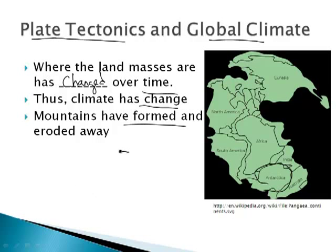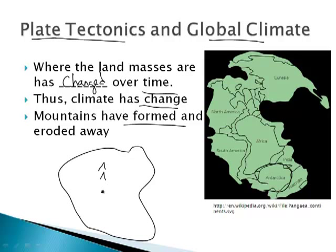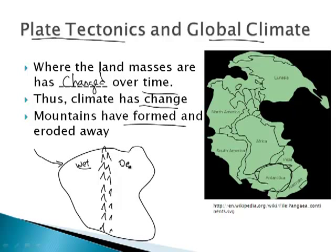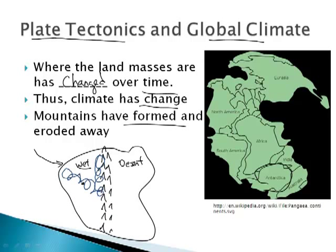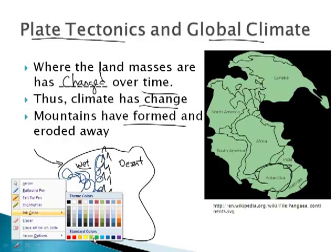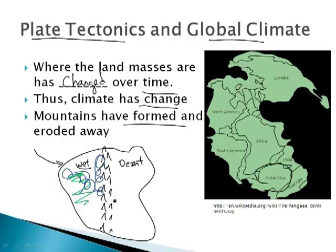Mountains have formed and eroded. So when they had Pangaea — I'm just going to draw a big blob here — at one point in Pangaea there was apparently a huge mountain range in the middle. The wind was blowing in one direction, making one section of Pangaea very wet. On the other side it was a desert, because all of the moisture gets trapped by this huge mountain range. All the moisture stays on the windward side, making it really green, while the other side is a very dry, yellow desert.